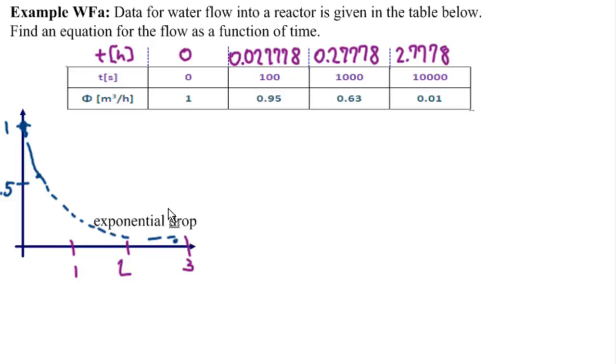And what kind of curve do we think this is? This is what we call an exponential drop. And the way the data was given in 0, 100, 1,000, 10,000 probably would have told us it was also an exponential drop. This means it drops off very fast and then the drop off slows down.